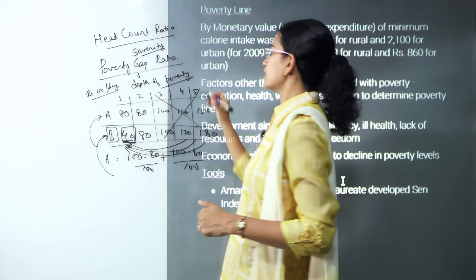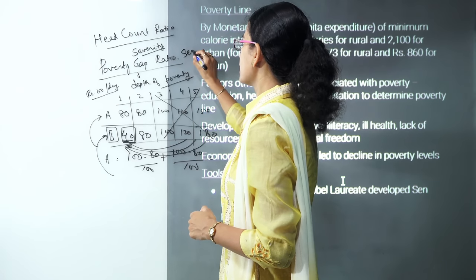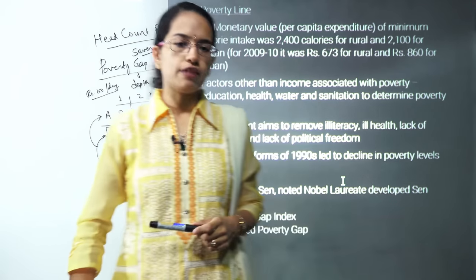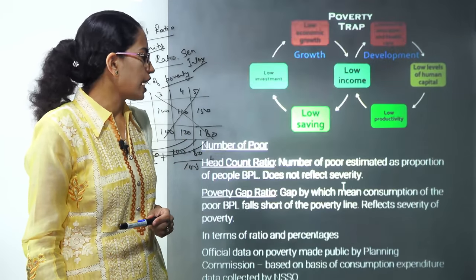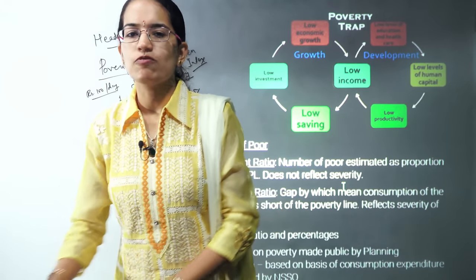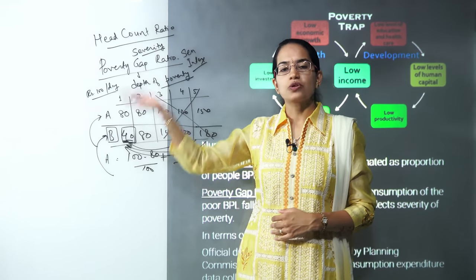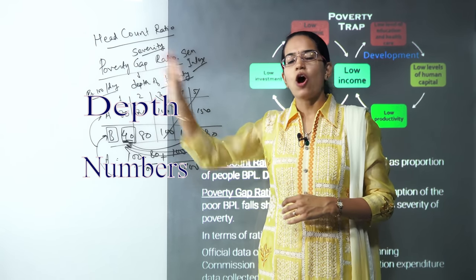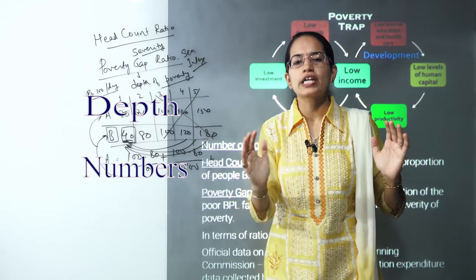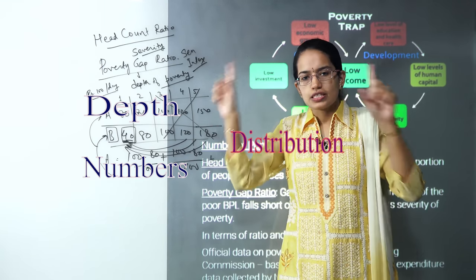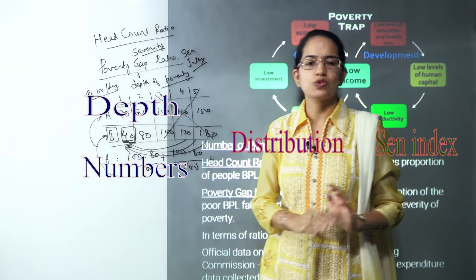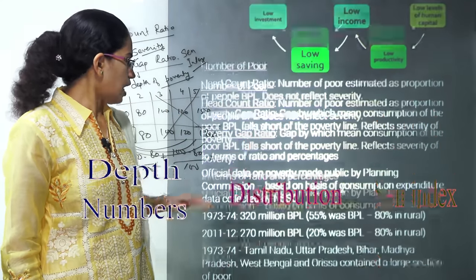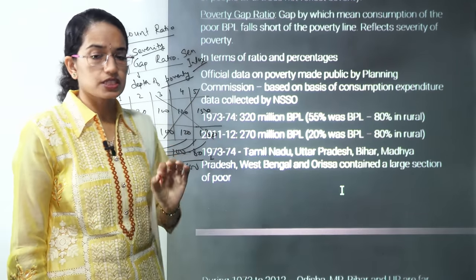The Sen index was developed by Amartya Sen, who won the Nobel Prize for his work on welfare economics. He combined the head count ratio (numbers of poor), the poverty gap ratio (depth of poverty), and also included the distribution of poverty. Using these three parameters, he created the Sen index — a very conceptual and important measure.